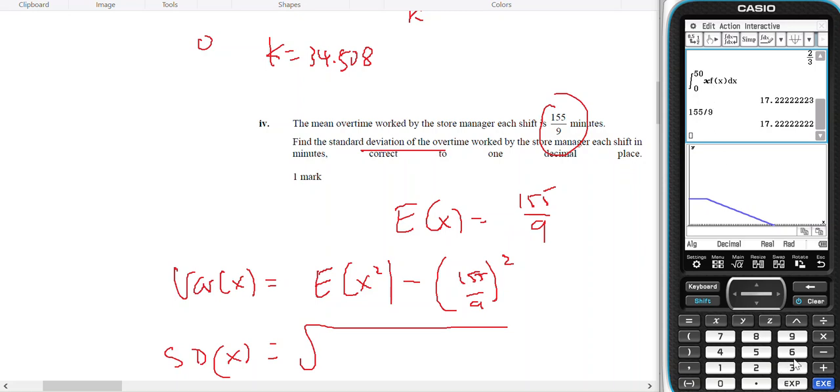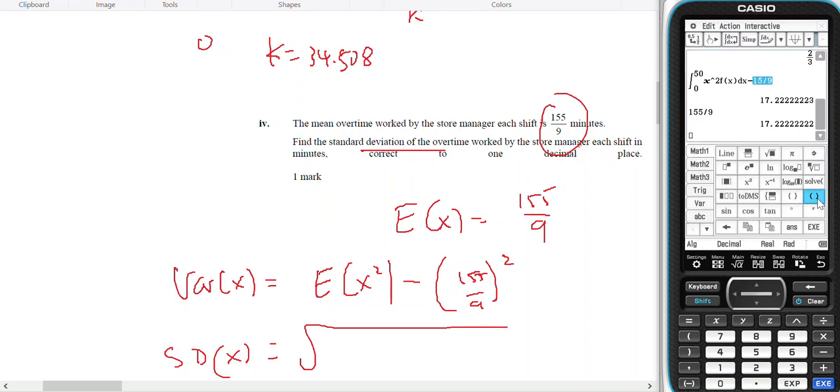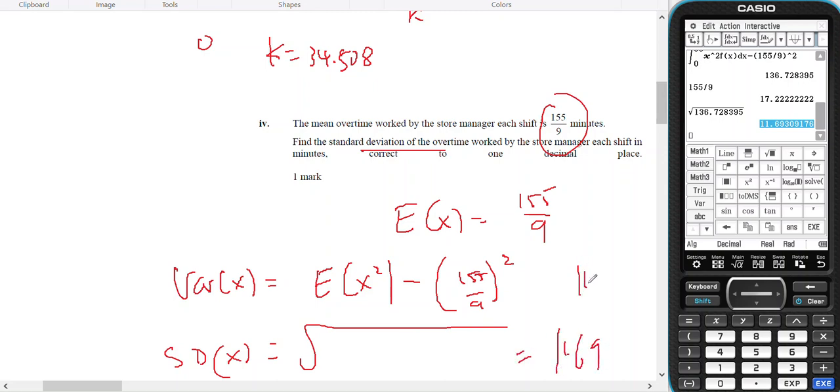So if I do x squared minus 155 divided by 9 and put a bracket around it squared, that should give me the variation. I'm 155 divided by 9, not 15 divided by 9. That should give me the variation. So then if I take the square root of that, that should give me the standard deviation, which is 11.69. So 11.7 will be the standard deviation to one decimal place. Okay.